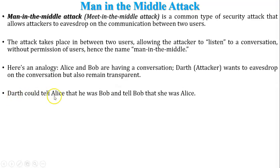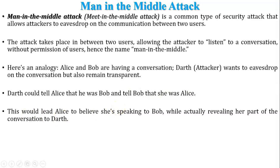Darth tells Alice that he is Bob, and tells Bob that he is Alice — giving Alice the identity of Bob and giving Bob the identity of Alice. This leads Alice to believe she is speaking to Bob, while actually revealing her part of the conversation to Darth. Whenever Alice tries to send a message to Bob, Darth captures, reads, and modifies the message, so Alice thinks she has sent the message to Bob. The modified message is then sent by Darth to Bob.